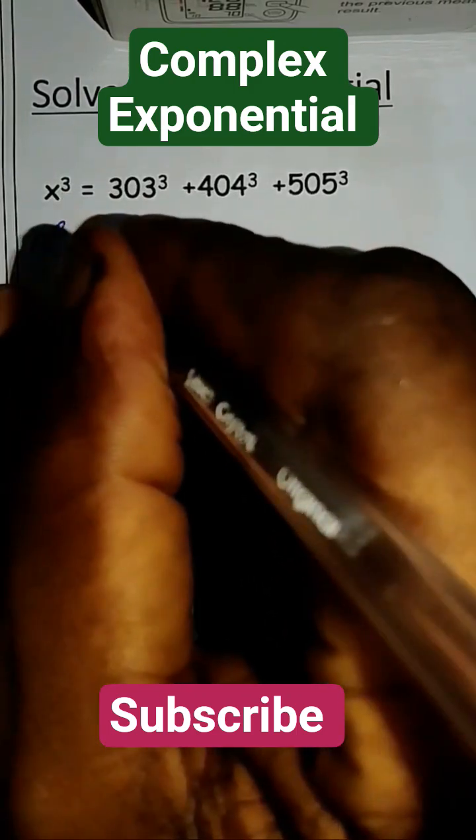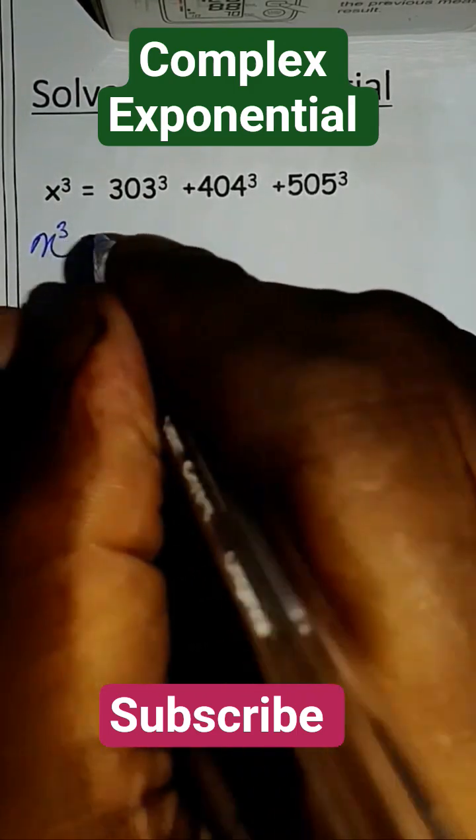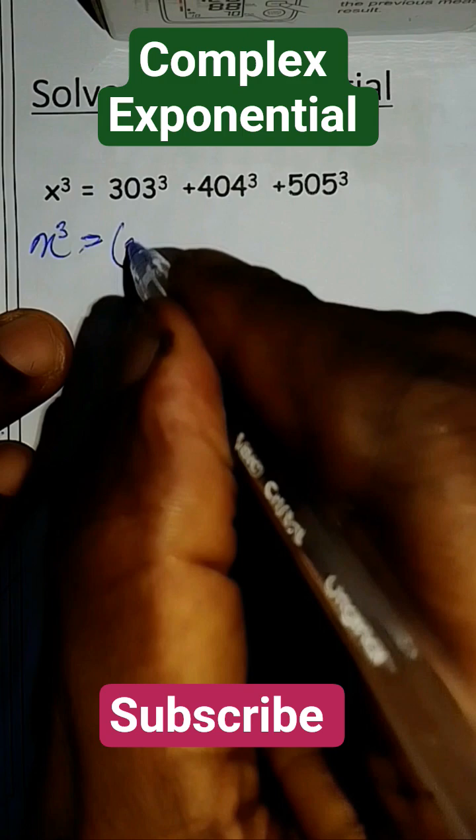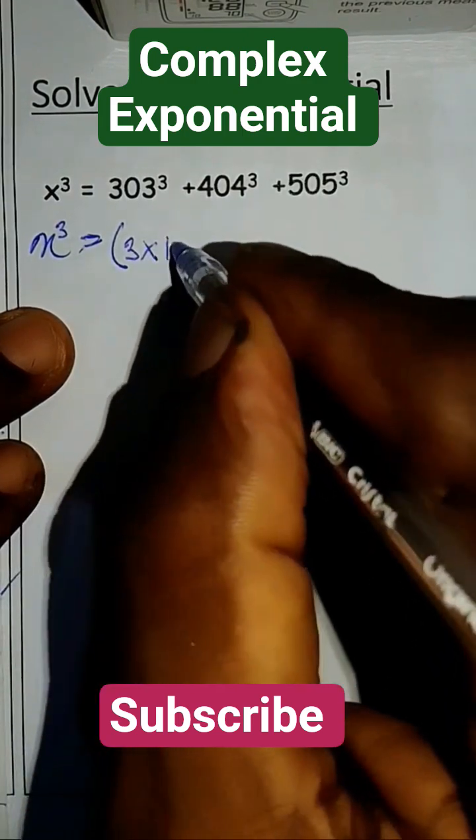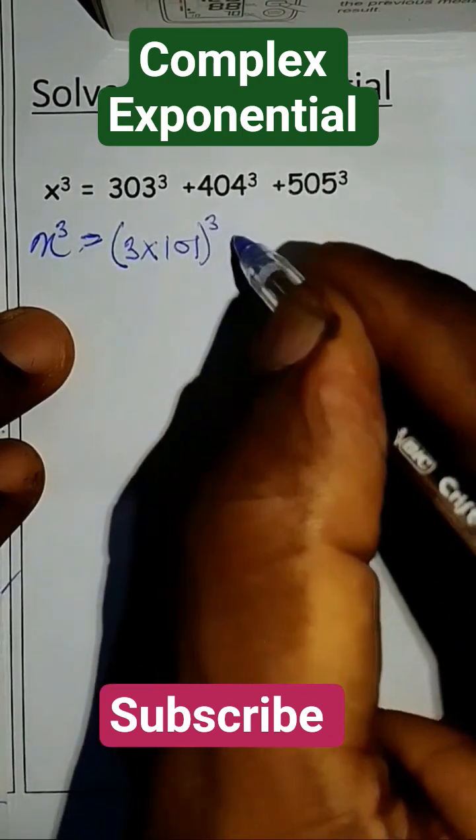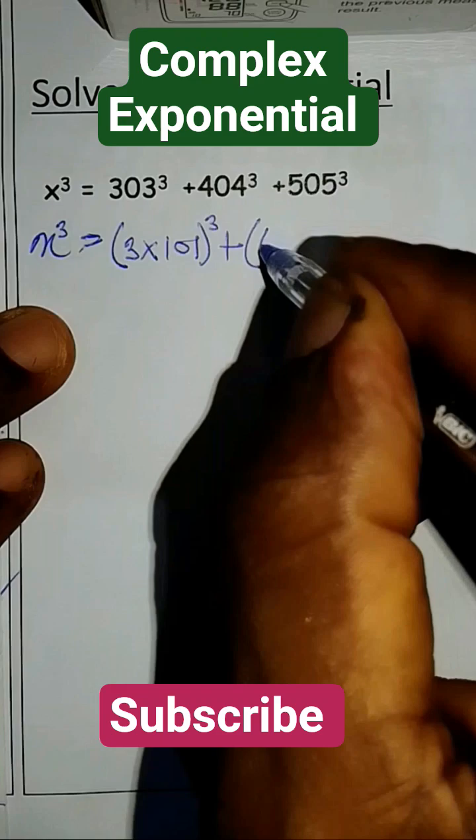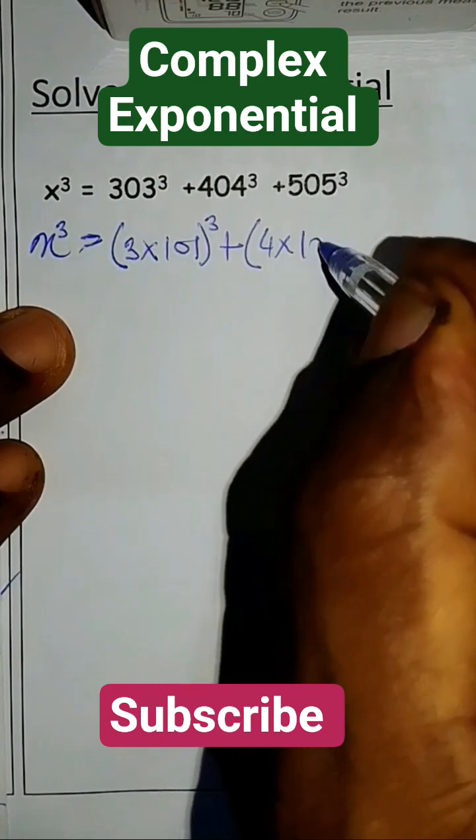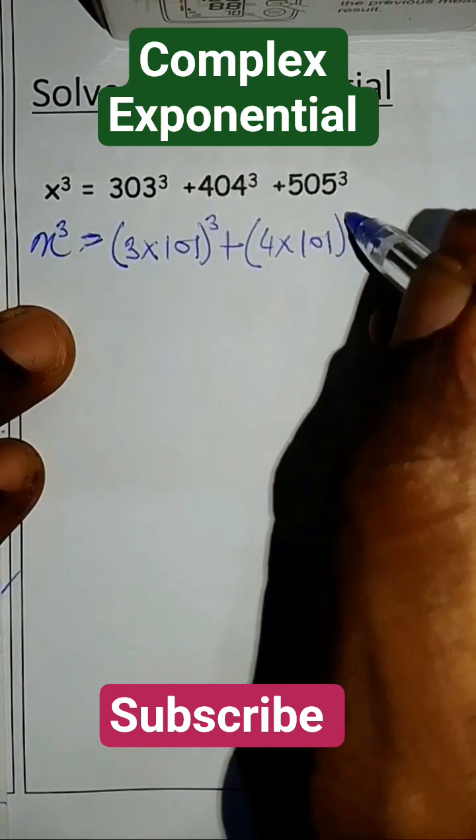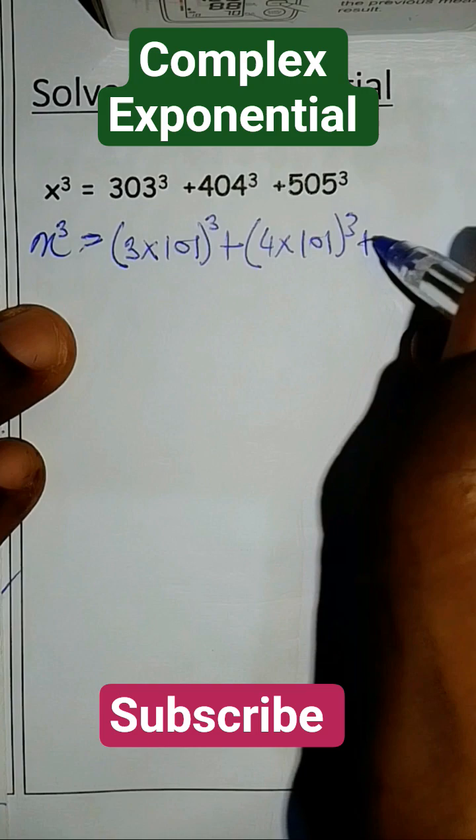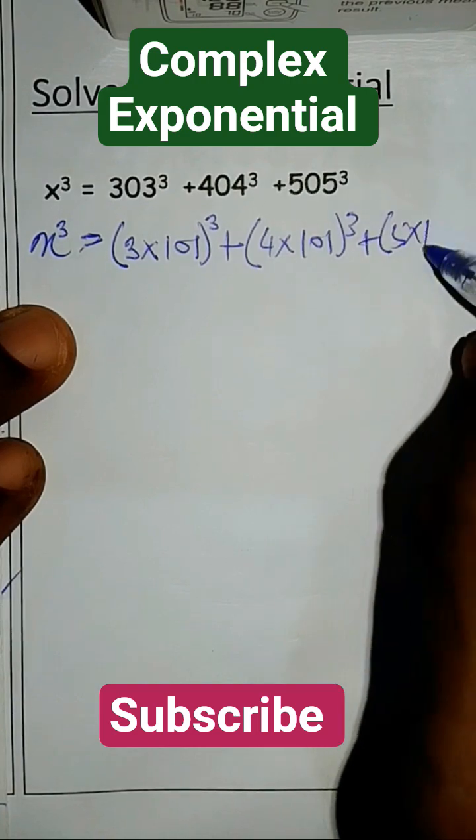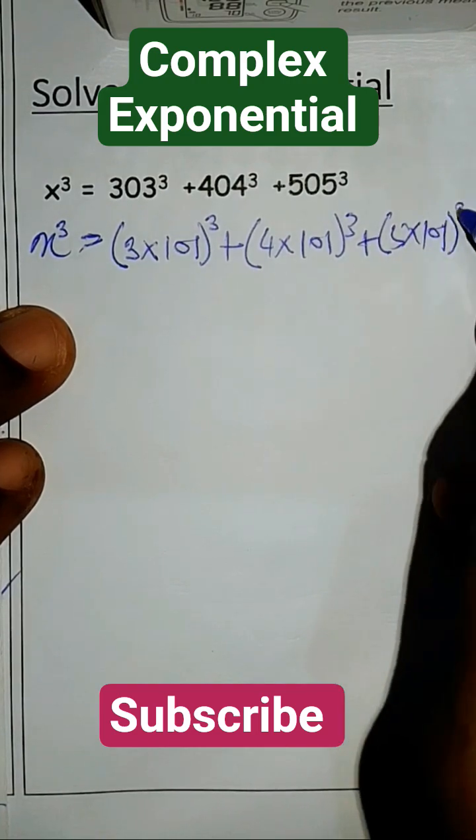So we have x raised to the power 3 is equal to 3 times 101 raised to the power 3 plus 4 times 101 raised to the power 3 plus 5 times 101 raised to the power 3.